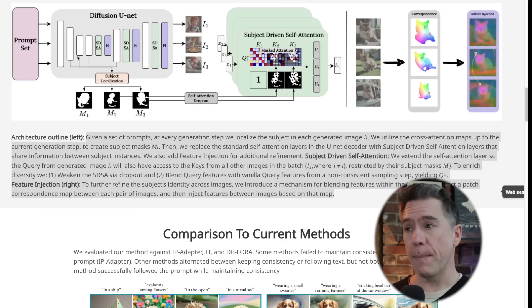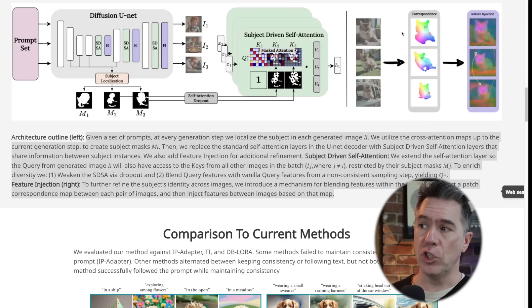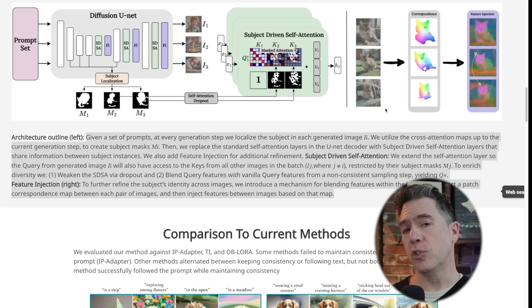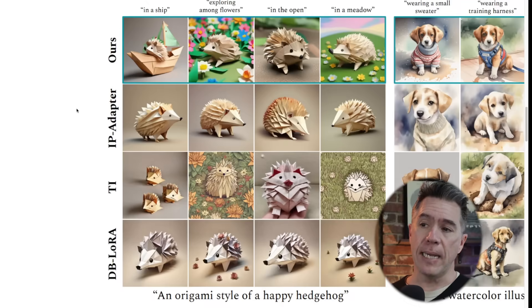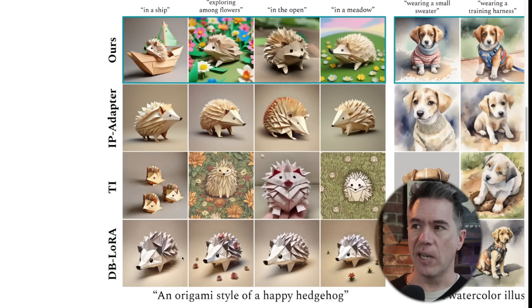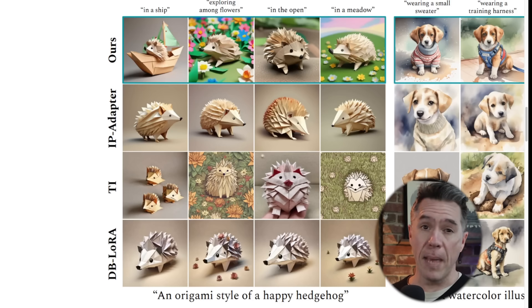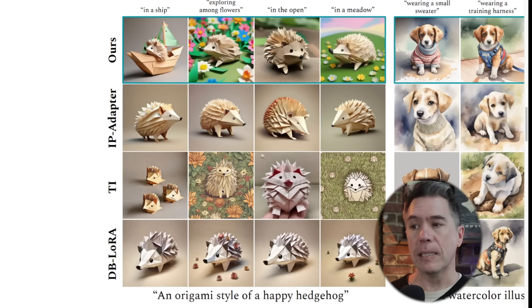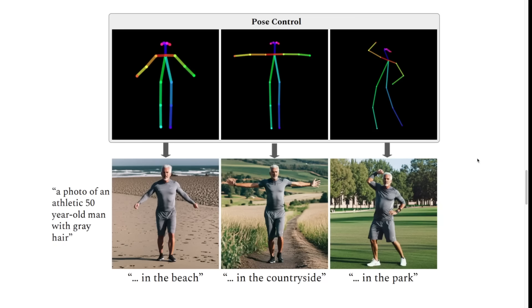The model then holds onto that mask and is able to inject it into future generations. They showcase their masking idea against other models, where you can see that in one example like Lore, it just stays the hedgehog — it does not change into flowers or a meadow. In another example, stylistically the hedgehog keeps changing.